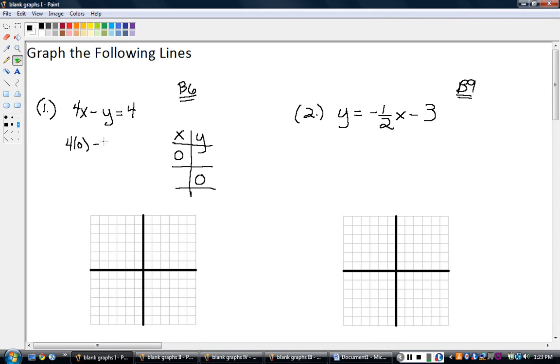Four times zero minus Y equals four. So that goes away, and I'm left with negative Y equals four. If you want, you can put a one there, just to remind you or to help you to know what to divide by. Divide by negative one, and that gives me Y equals negative four.